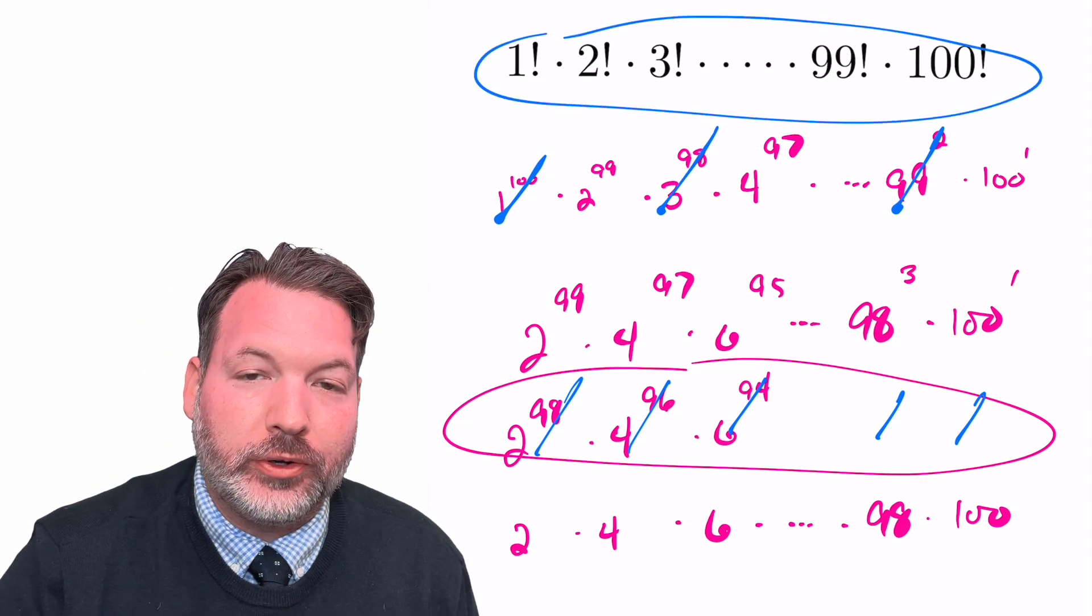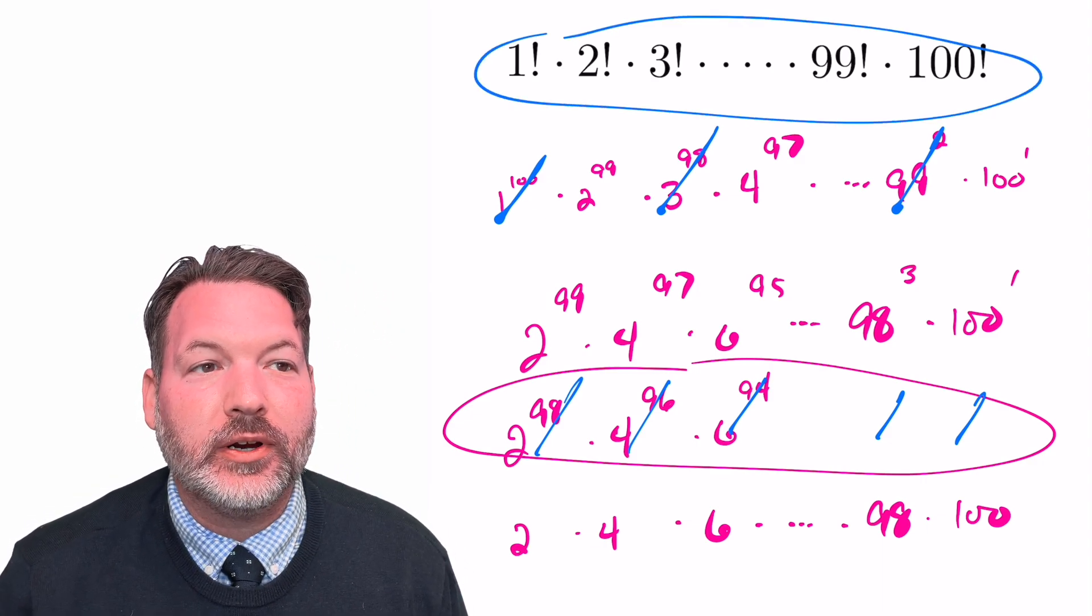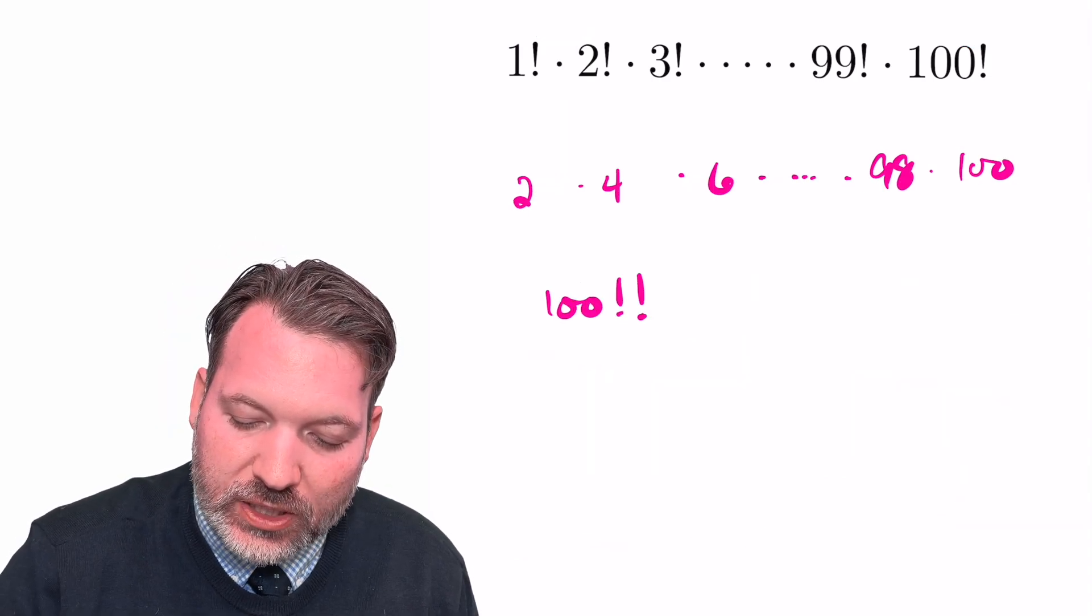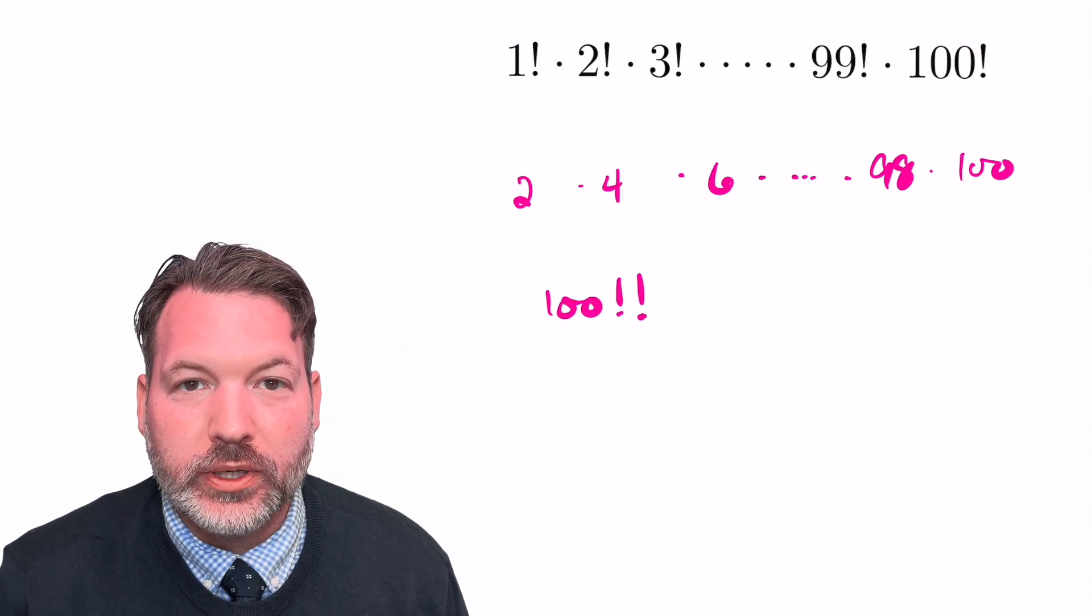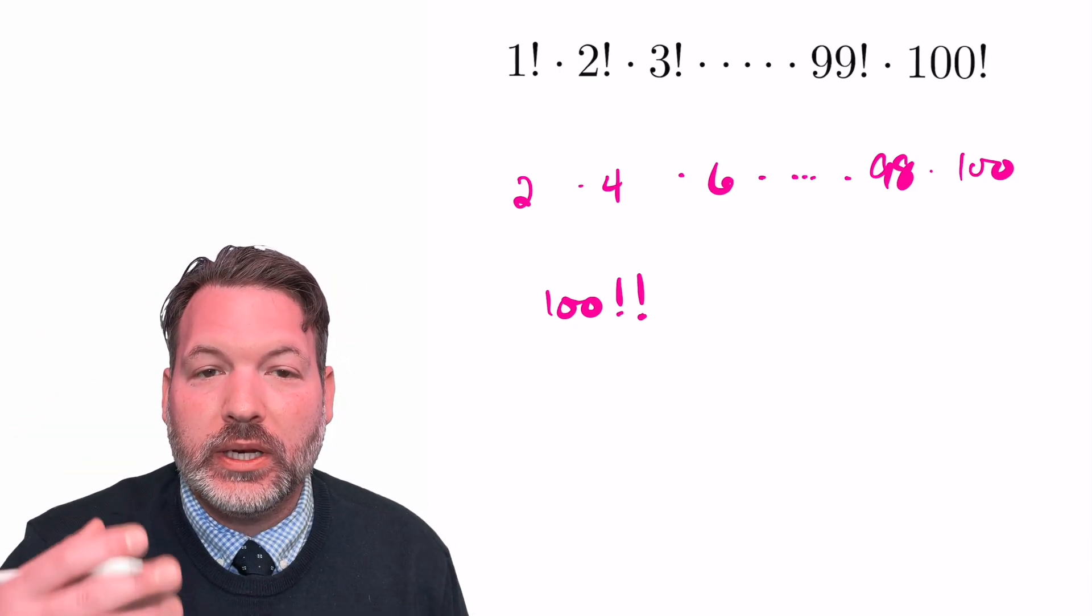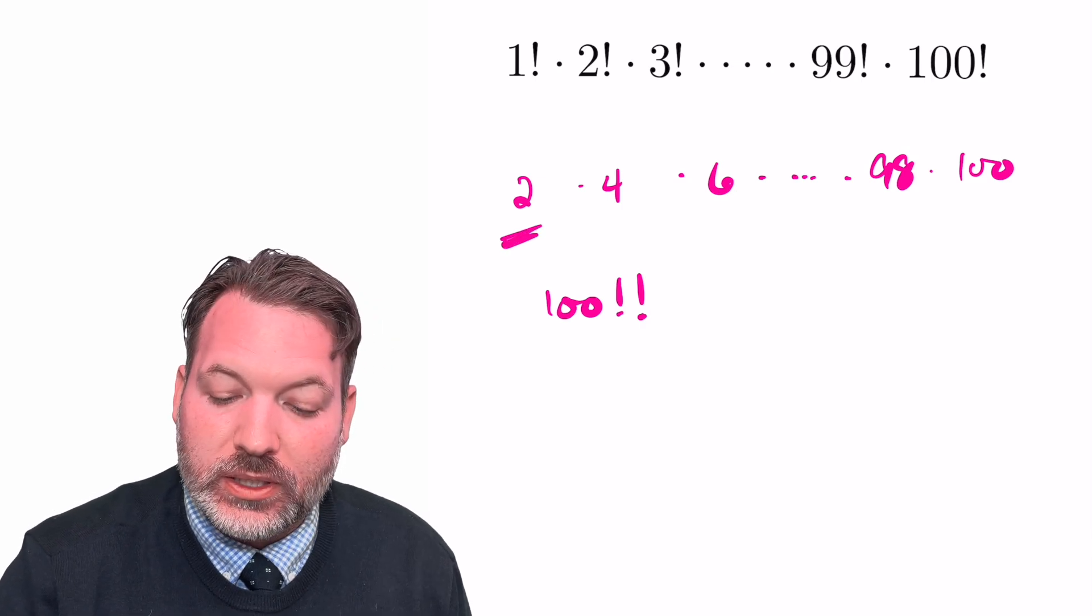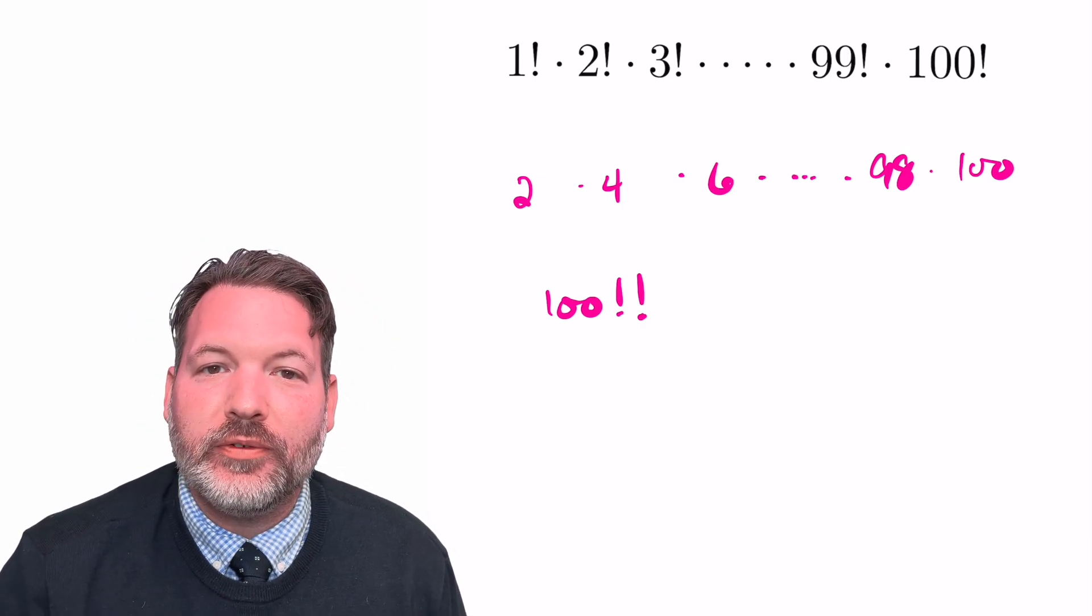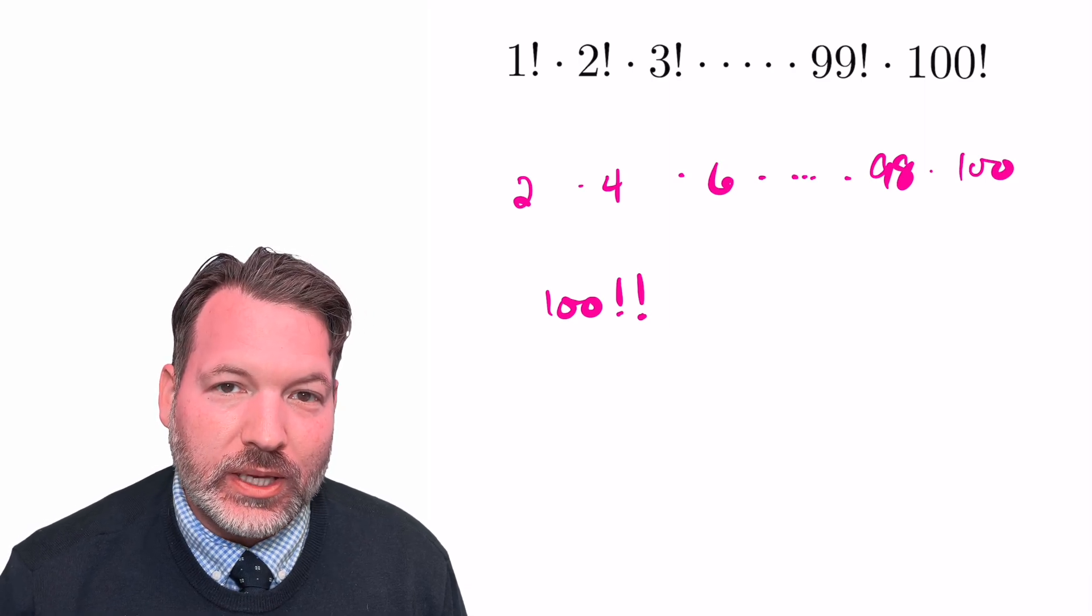Now, it's not one of these factorial numbers, so we're not quite to our answer. It's what's called a double factorial. This is specifically the double factorial of 100. That means starting at 100, counting down by 2s—100, 98, 96, all the way down to 2—and multiplying. And there's an interesting connection between even double factorials and factorials themselves.